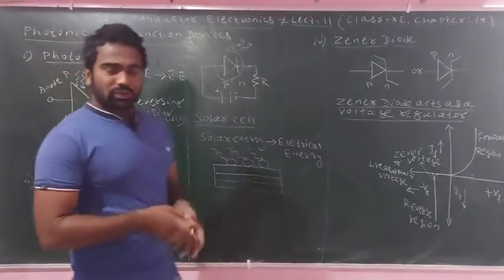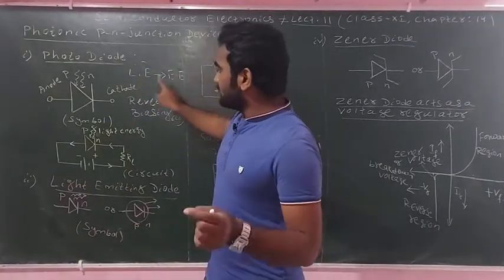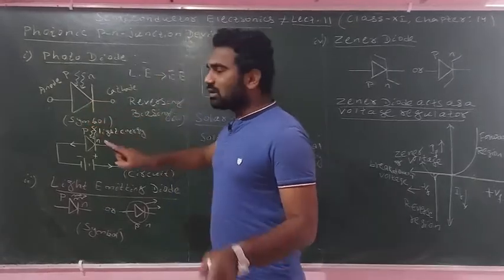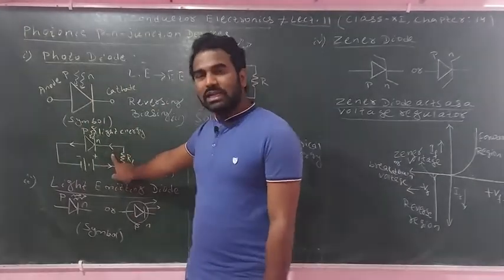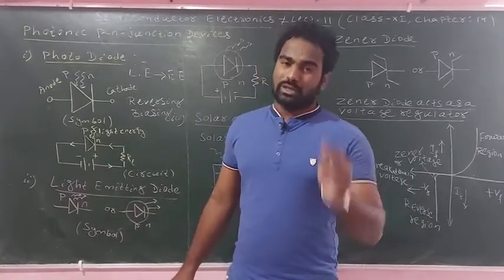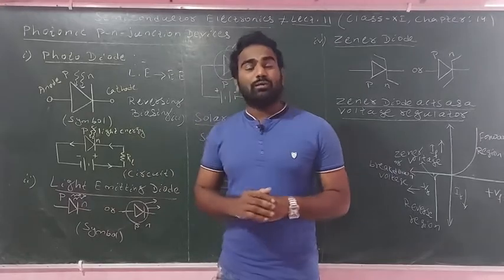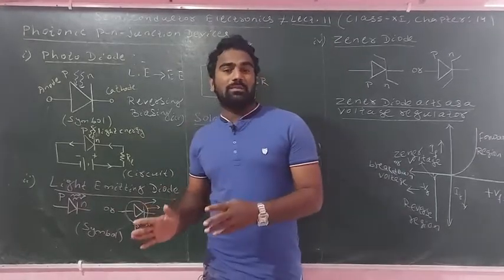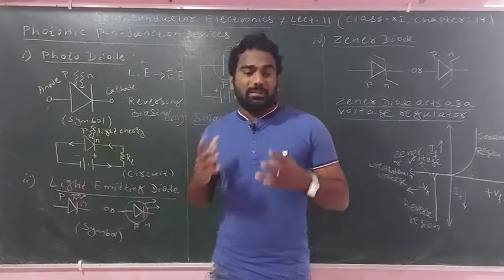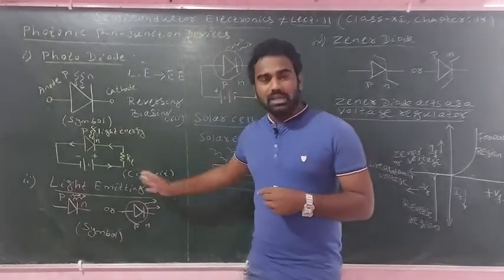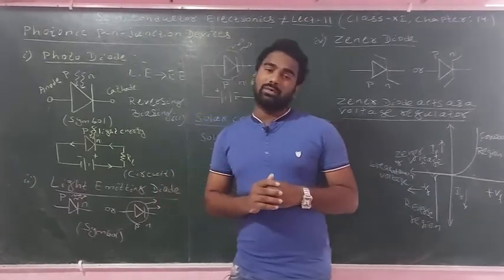The definition of a photodiode is that it converts light energy into electrical energy. The second is the symbol. The reverse biasing principle is used. The circuit diagram is used in applications such as burglar alarms, fire alarms, television studios, and to measure the temperature of stars.